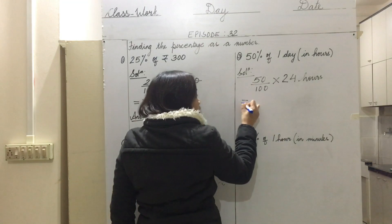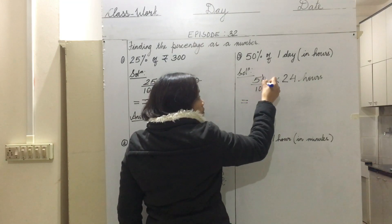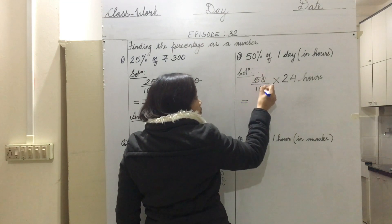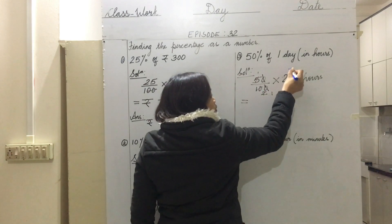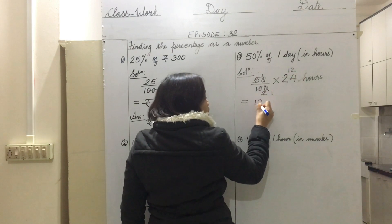Then we reduce again with the same method: zero and zero, 5 and 5, 2 and 2. So what do we get? 12 hours. Do not forget to write units at the end.